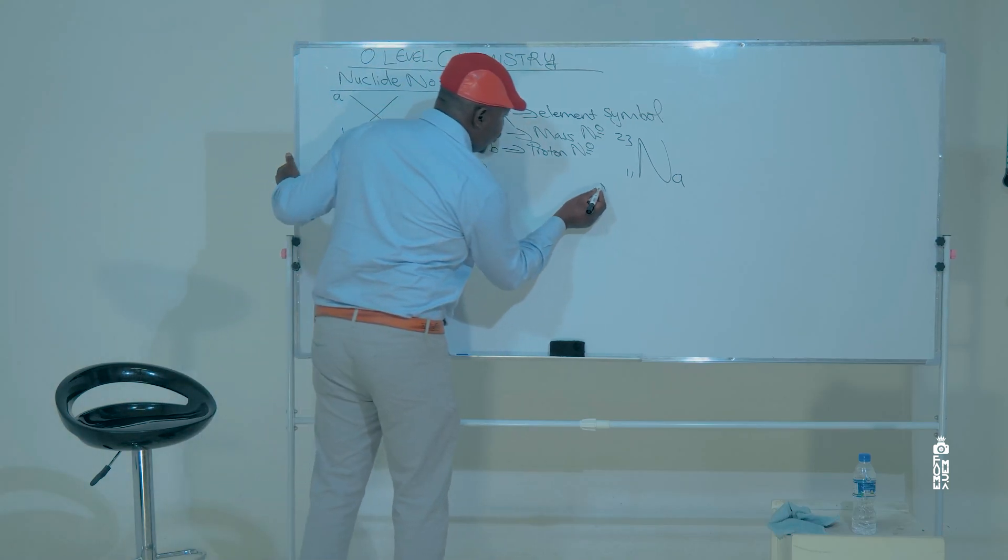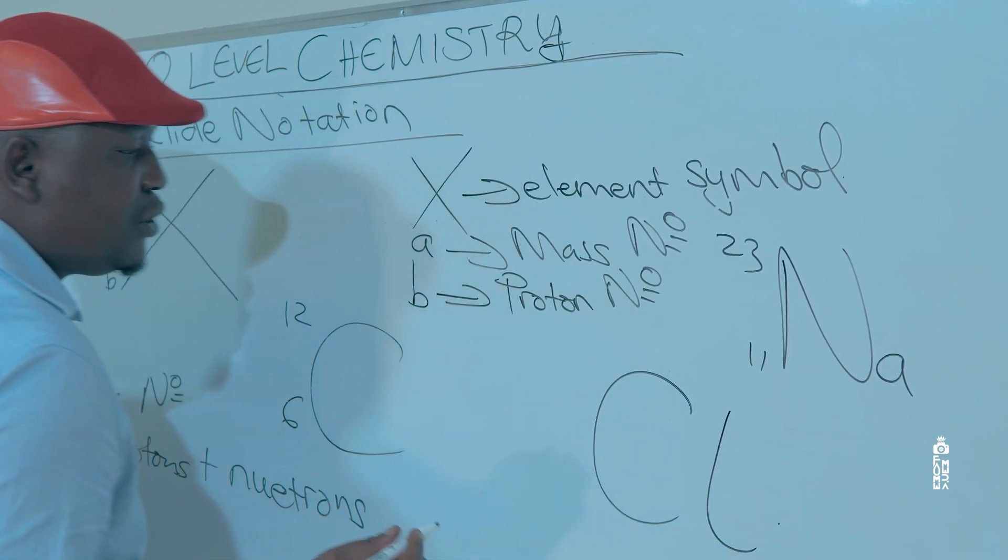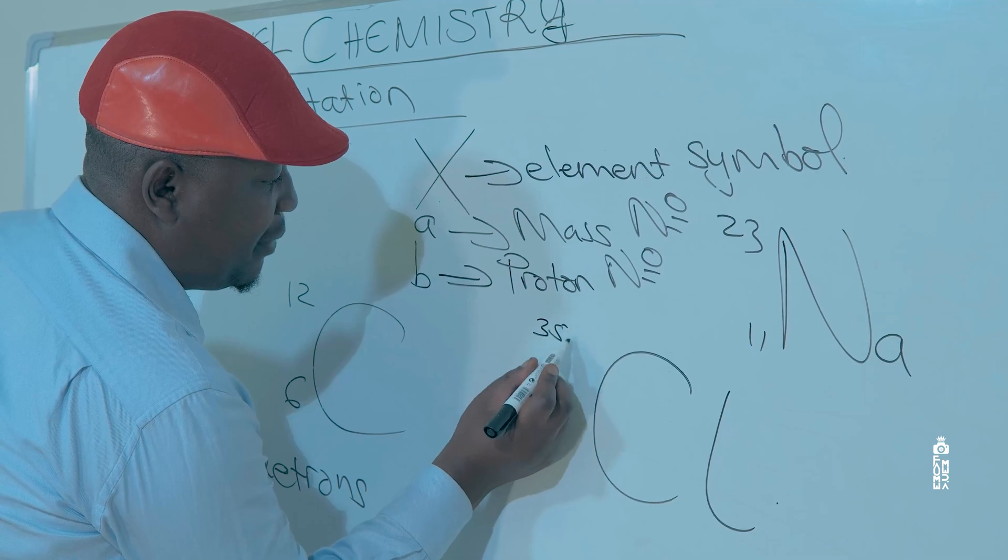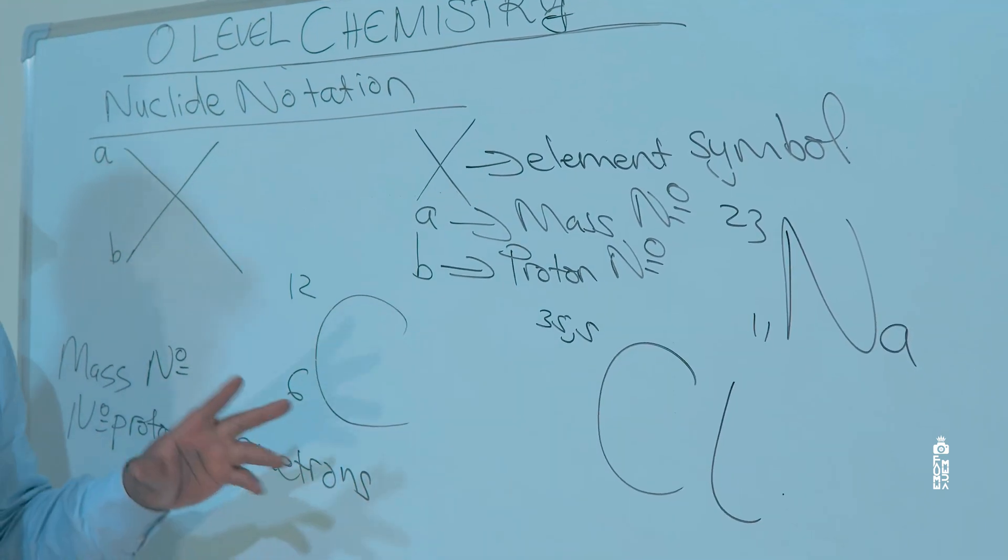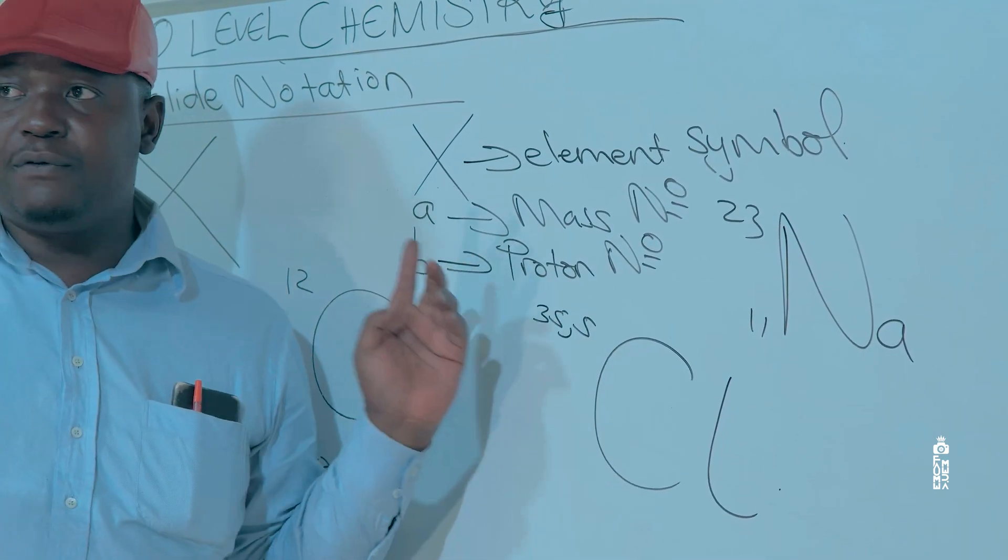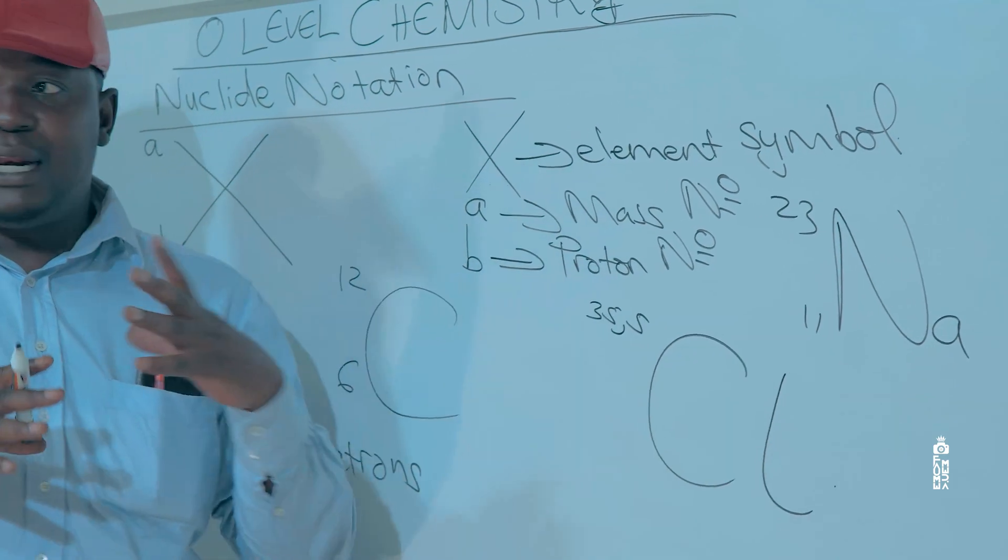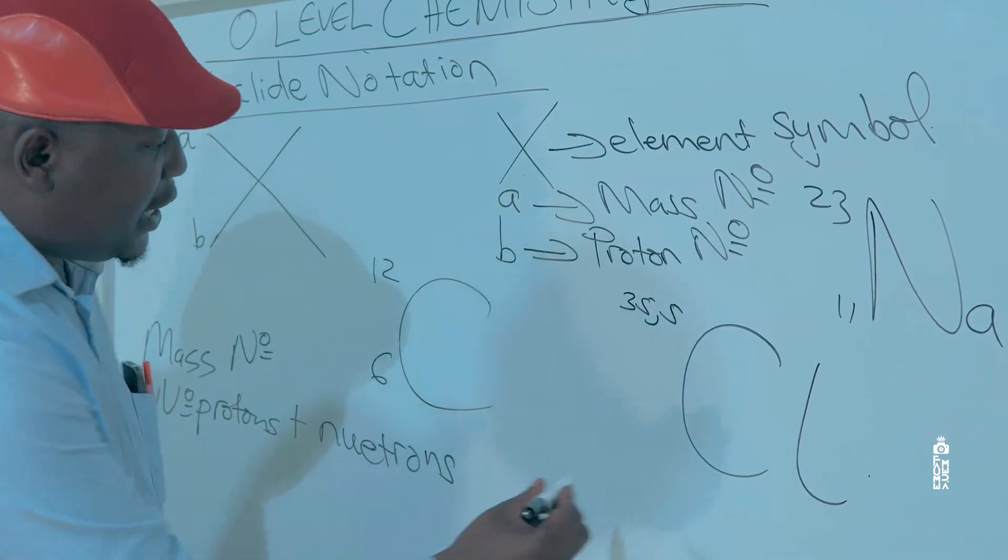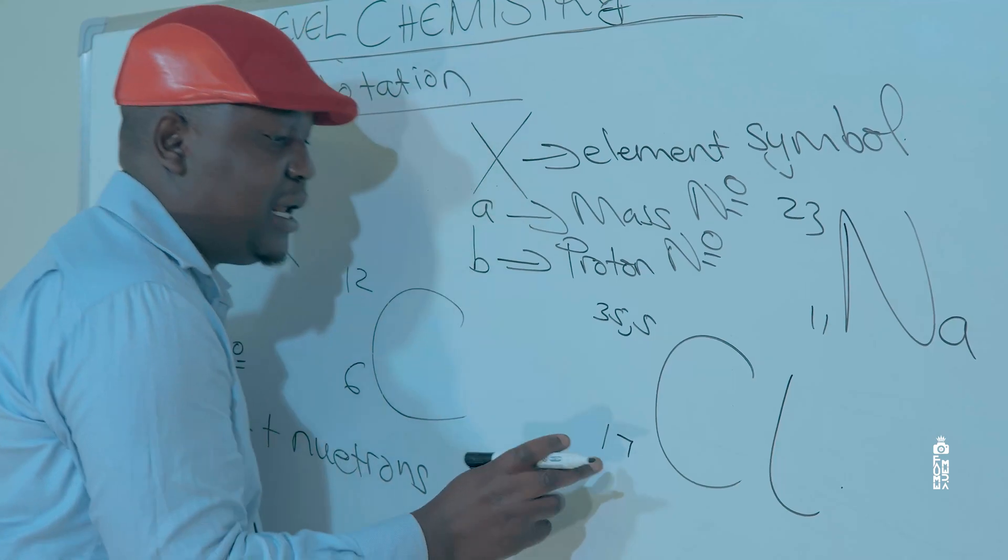Other examples, we have chlorine. Chlorine is written as 35.5, 17. I'm going to explain in another video why chlorine is 35.5 because of the relative abundances of the isotopes. And we have a proton number of 17.